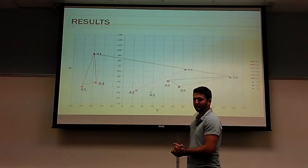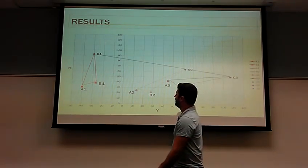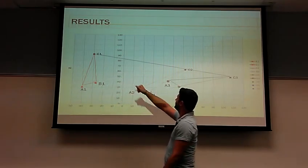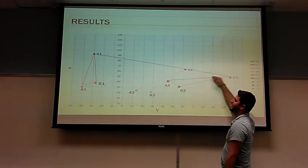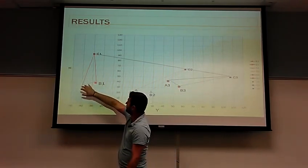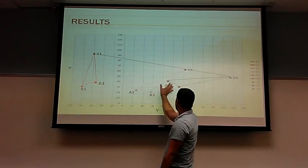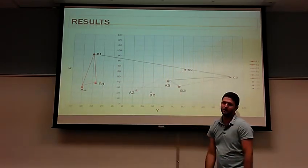This is the graphical representation of our C values. As you can see here, we have a perfect line between C1 and C3. And this is basically how the link 3, or the points, will move around our slider crank mechanism.